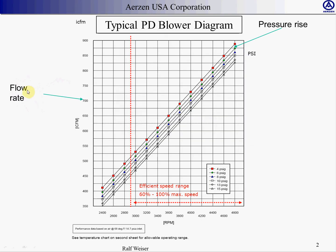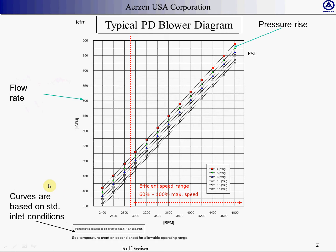The beauty of a positive displacement blower is the linear function between speed and flow. This is due to the fact that the positive displacement machine, as the name pretty much already spells it out, positively locks the air inside the housing between the rotors, and the moment that you turn the driveshaft, it spins out air. This is based on inlet flow in inlet conditions, which means this machine is not all that susceptible to a difference in relative humidity or pressure variance.